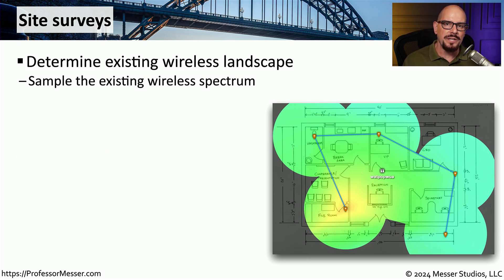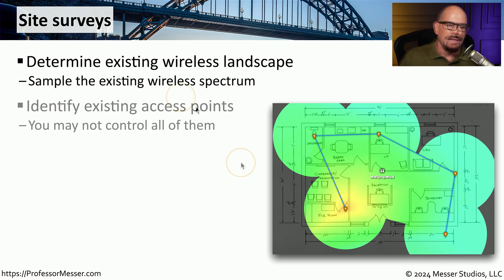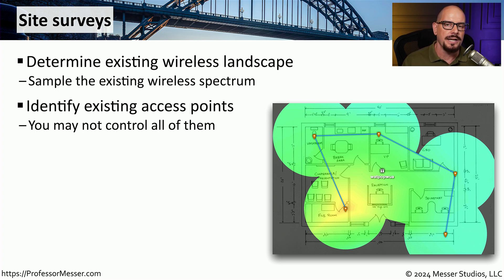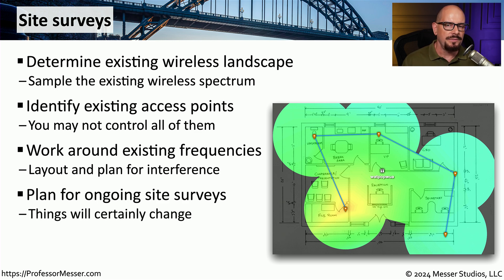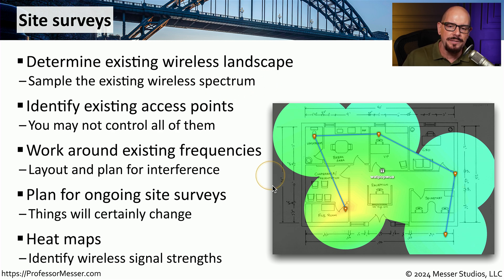As we're increasing the number of access points and other wireless infrastructure in our organizations, we need documentation to understand the impact of all these different wireless components. For that, we will create a site survey. This would allow us to identify all of the access points that we might be using, even those we may not be in direct control of. We can at least see the frequencies that are in use and document those as part of the site survey. Once we understand all the frequencies in use, we can configure our systems to have the minimum level of interference for all of our access points. One common way to document this is with a heat map — you can walk around and use a mobile device to document how the wireless signal may be propagating depending on where you may be standing inside of your building.